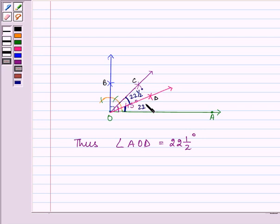As OD is the angle bisector, it is bisecting angle AOC into two equal halves. So angle AOD is 22 and a half degrees.